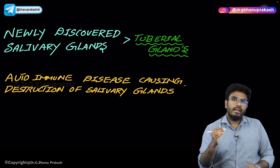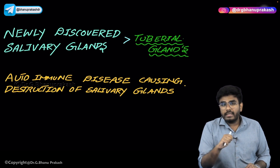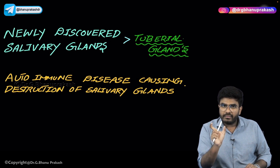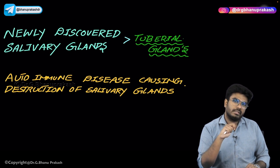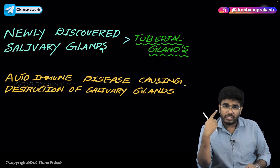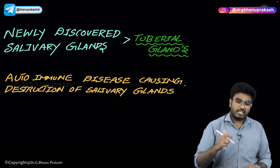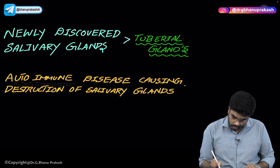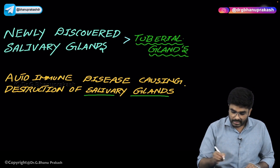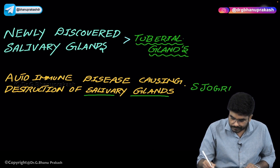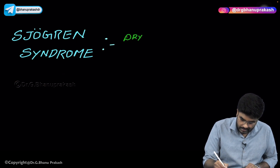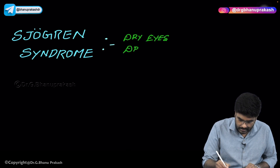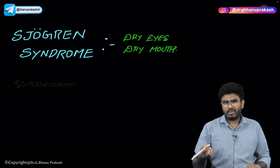Consider a condition where a person produces antibodies that come and destroy the salivary glands as well as the lacrimal glands. If both are under autoimmune attack and get destroyed, the result is dry mouth and dry eyes. This condition — autoimmune destruction of both salivary glands and lacrimal glands — is called Sjögren's syndrome. The clinical features are dry eyes and dry mouth, and it is commonly seen in females.